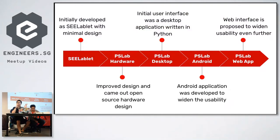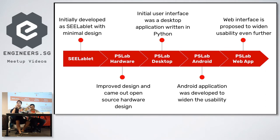This is the rough timeline of how PSLab came about. It started from the C-Lablet, then came the first Uno version of the hardware. To show the data, we had to create a desktop app. And of course, it's not Pocket Science Lab if it's not portable, so then followed the Android app. And to support wireless transmission of data so you can view it from various places, a web app as well.